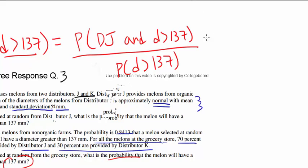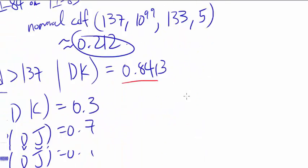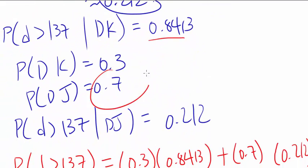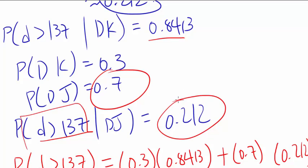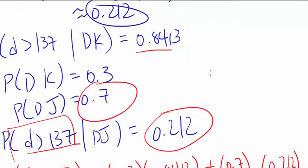We can find the probability of DJ and more than 137. The probability of distributor J is 0.7 and the probability that diameter is more than 137 given that it's distributor J is 0.212.